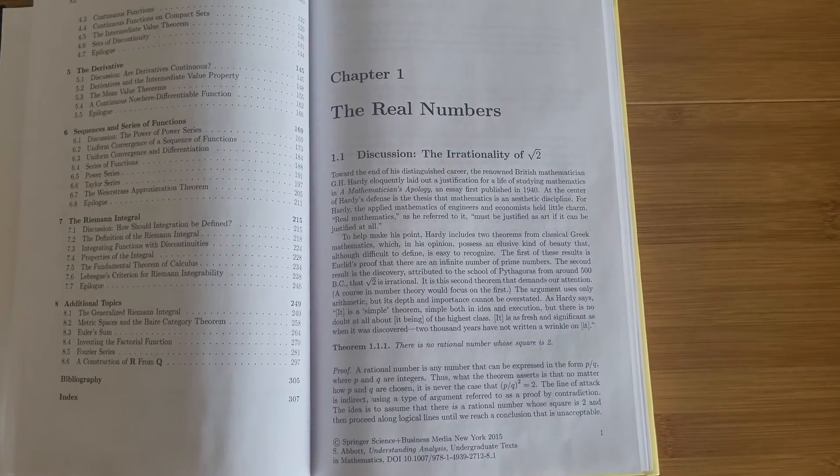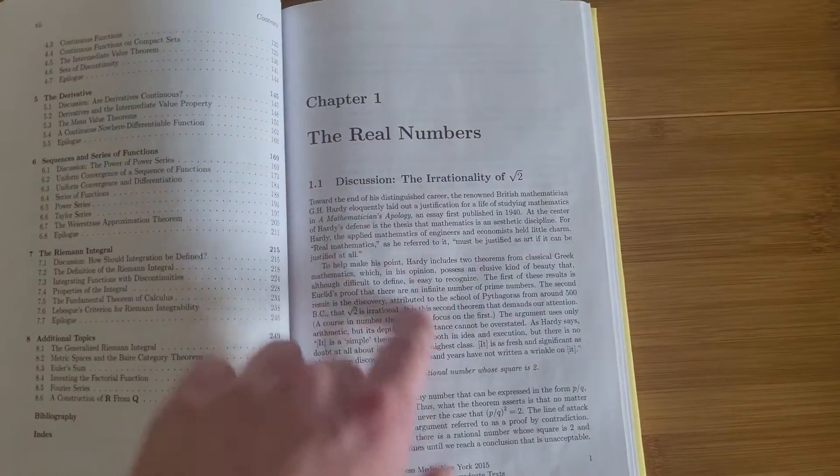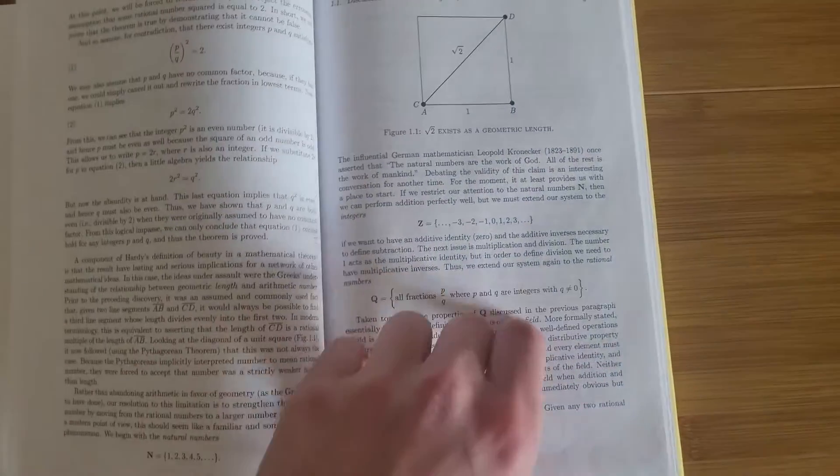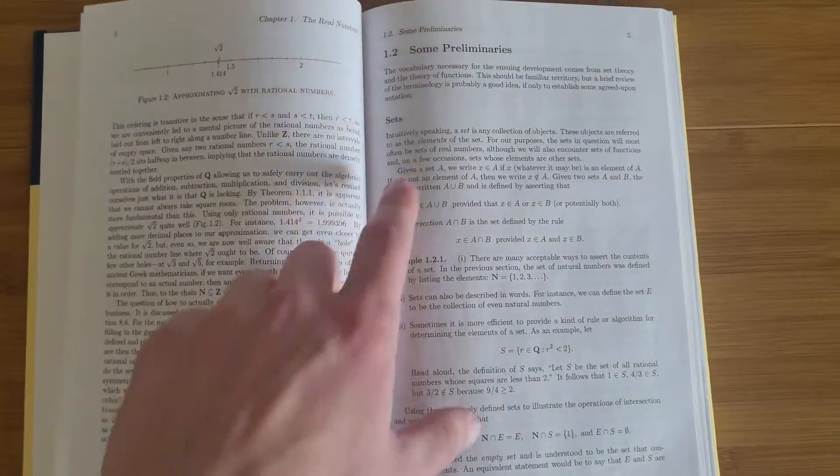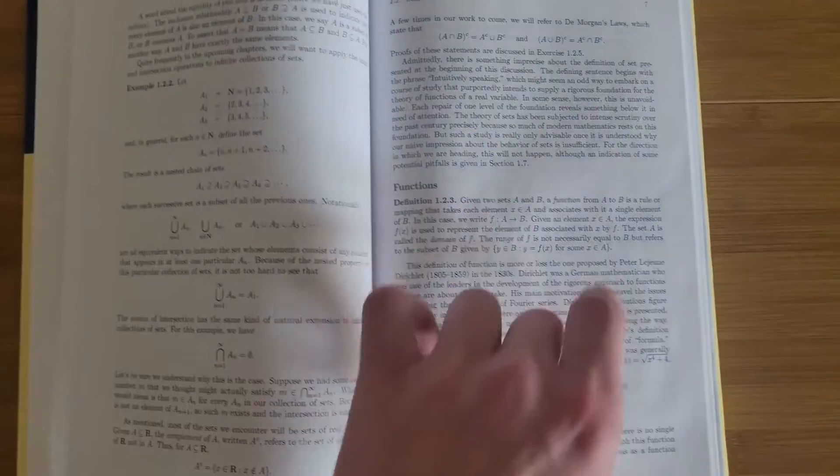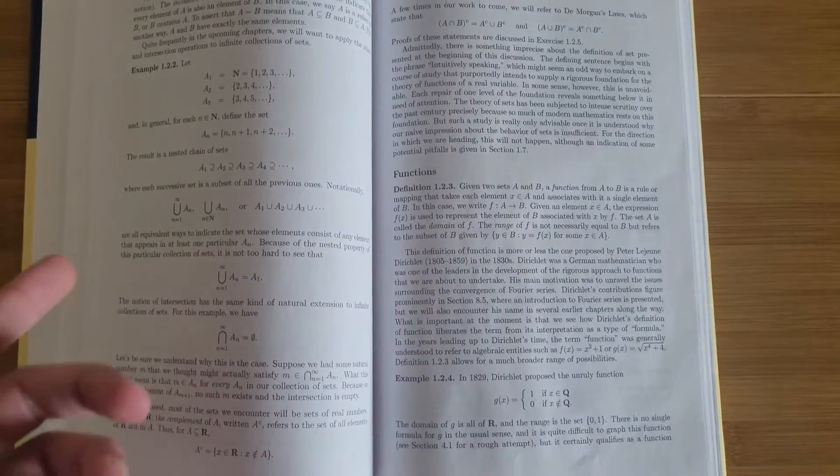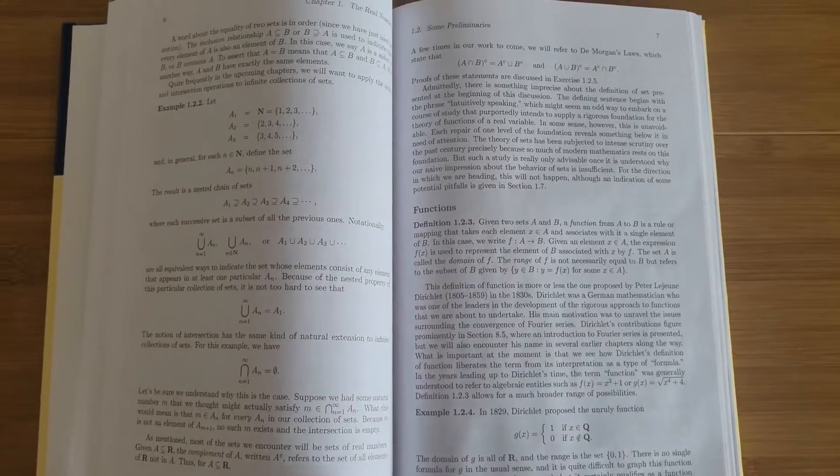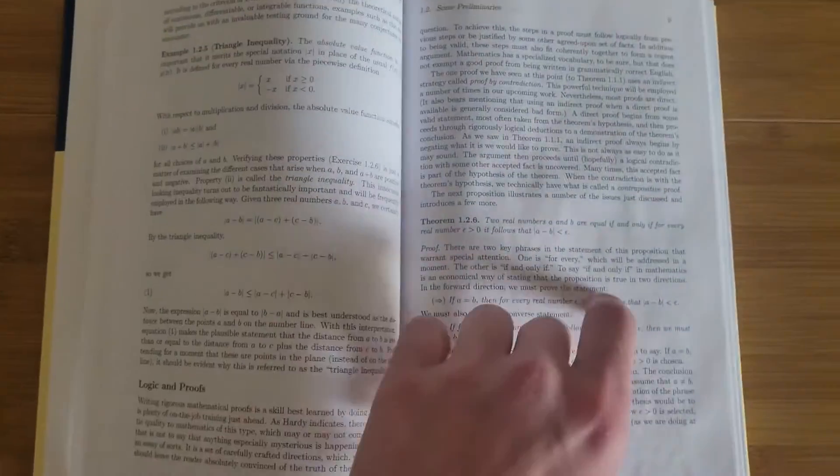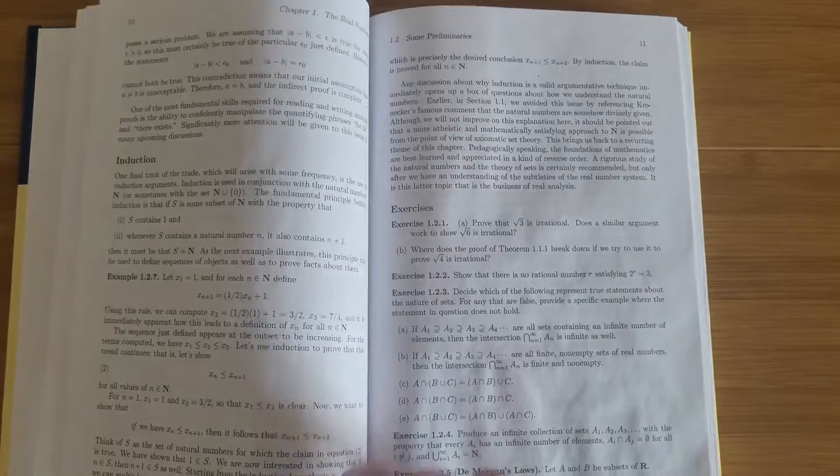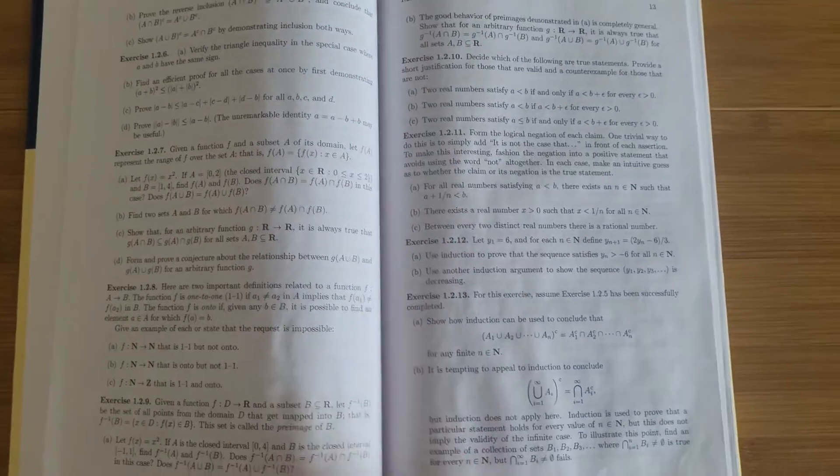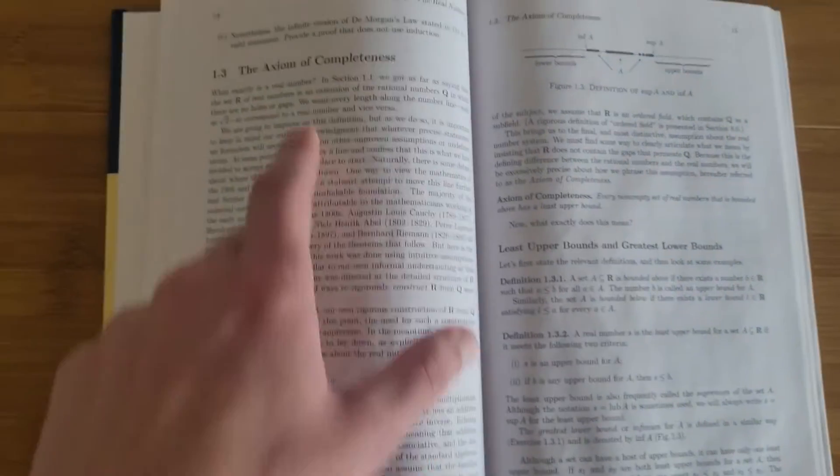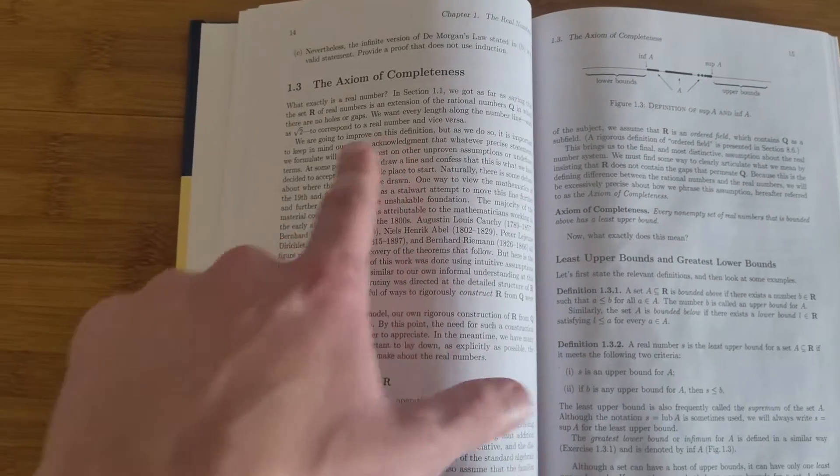In terms of how each chapter is organized, we start with a discussion that's relatively short, then move on to the actual section which covers examples, definitions, and theorems. We end with exercises. Some chapters have few exercises, some have many. This chapter has 13, then moves to the next section.